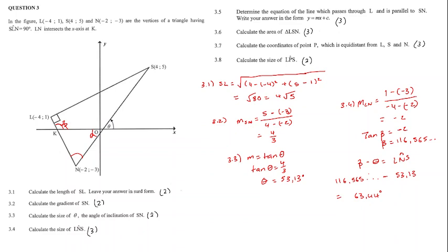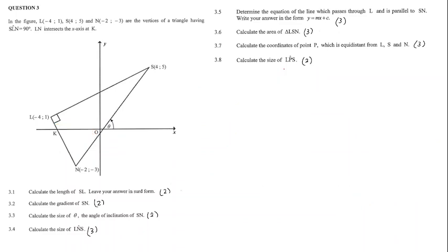I'm going to do the next four questions on a new slide, so there's more space to work out. Question 3.5. Determine the equation of the line which passes through L and is parallel to SN. Write your answer in the form Y is equal to MX plus C. If the line is parallel to SN, we know that it also has the gradient 4 over 3. And it passes through L. So, this is one point on the graph. We can say Y is equal to MX plus C. We have our Y value being 1, M being 4 over 3, and X being negative 4. We can then calculate our C value.